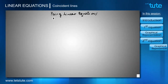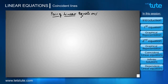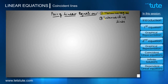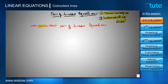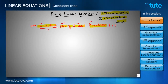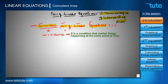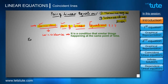Welcome to the second session of pair of linear equations. In the last session we learned the basic terminologies used in this concept and what intersecting lines are. In this session we are going to learn about coincident pair of linear equations. The word coincident came from coincidence, meaning similar things happening at the same point of time.